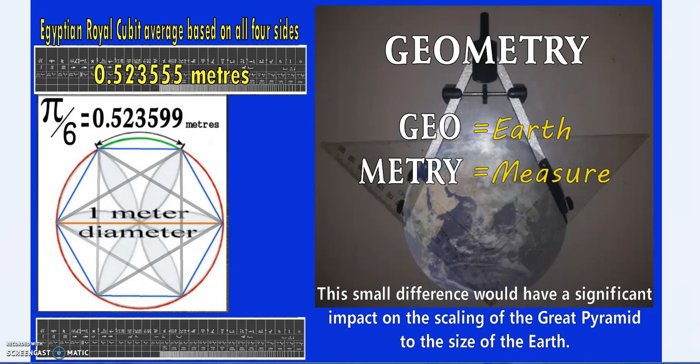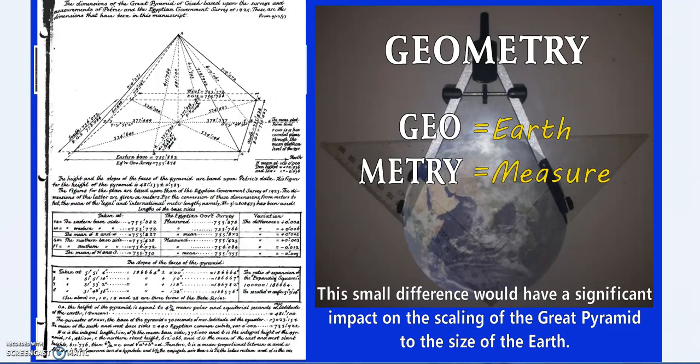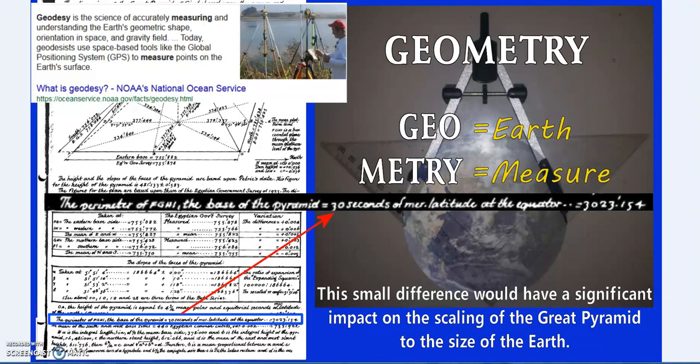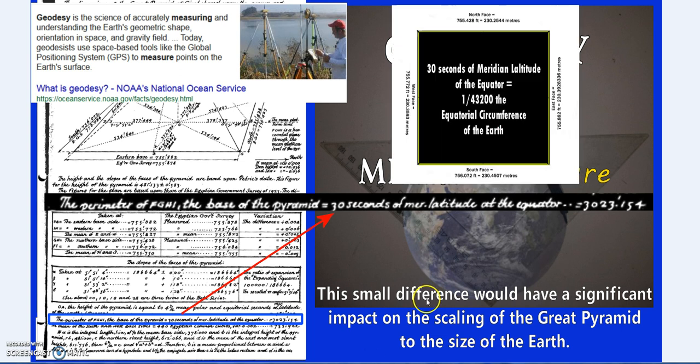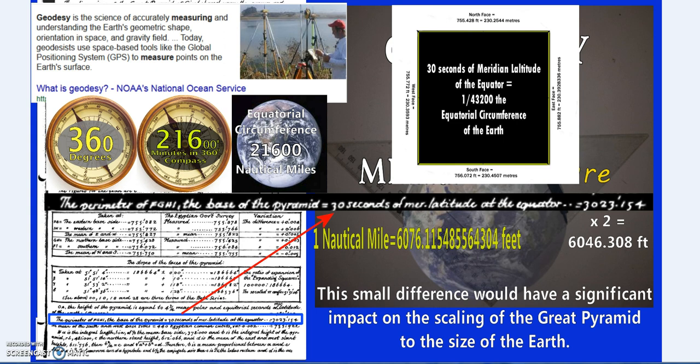It's often said that the Great Pyramid is scaled to the size of the earth. It's hinted at in published work by Cole that it's geodesic or earth-based measures. The perimeter of the Great Pyramid is 30 seconds of meridional latitude.